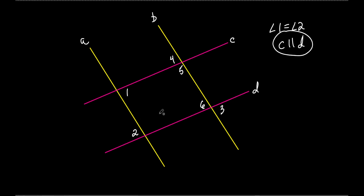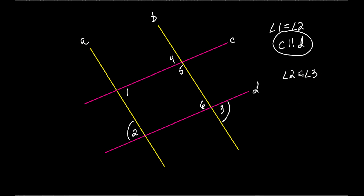What if angle two and angle three are equal to each other? Your common line between two and three would be this pink line. So the yellow lines would be parallel. Angles two and three are alternate exterior angles. So if angle two equals angle three, then a must be parallel to b.